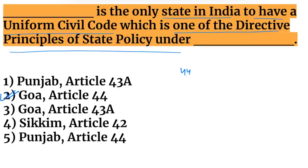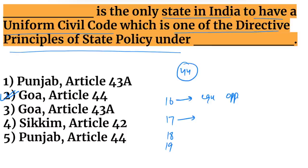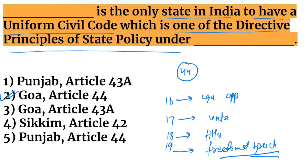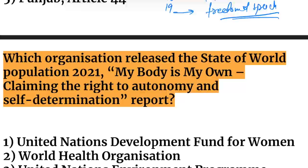Let's revise some constitutional articles: Article 16 — equal opportunities in jobs; Article 17 — abolition of untouchability; Article 18 — regarding titles; Article 19 — freedom of speech.